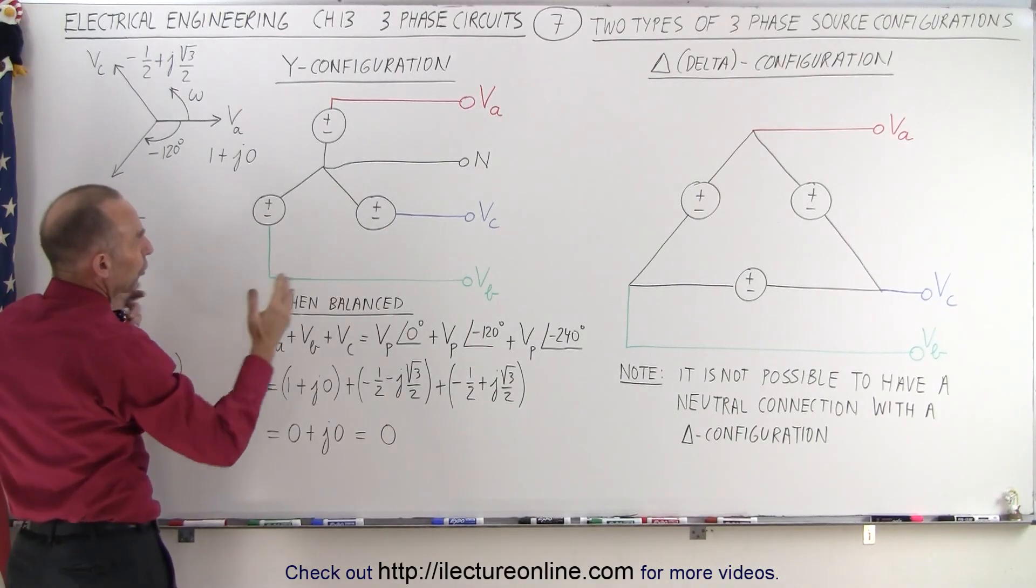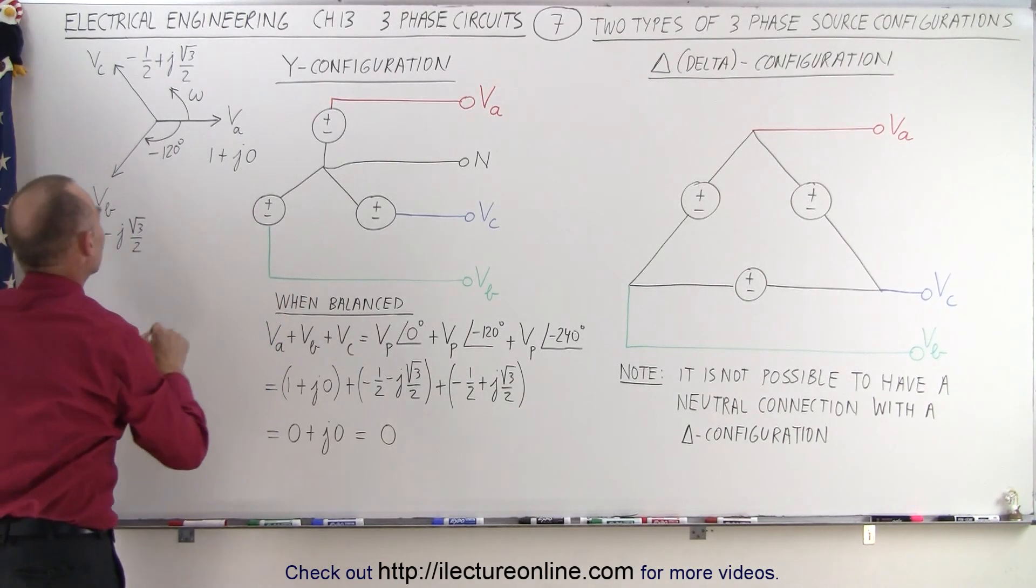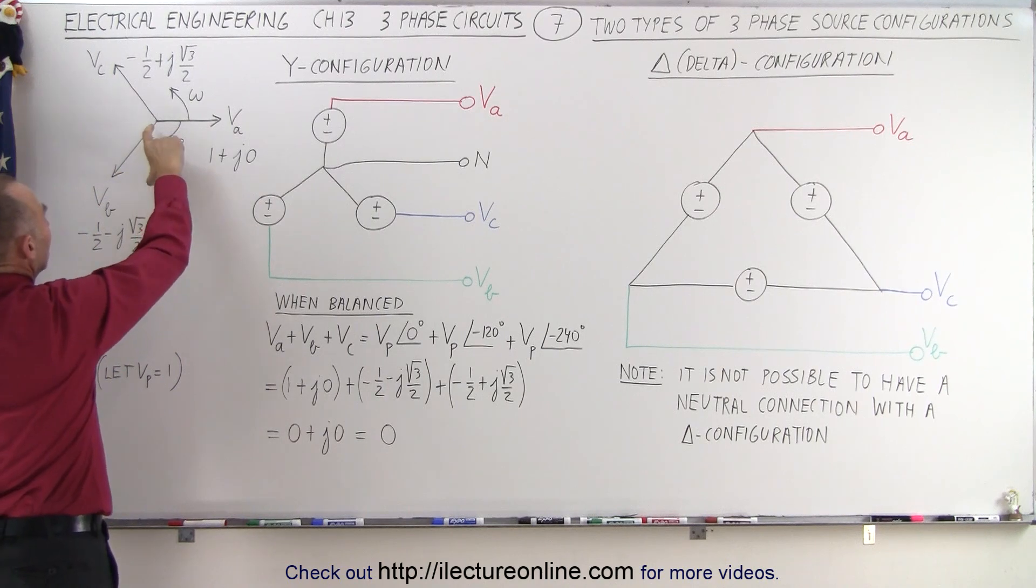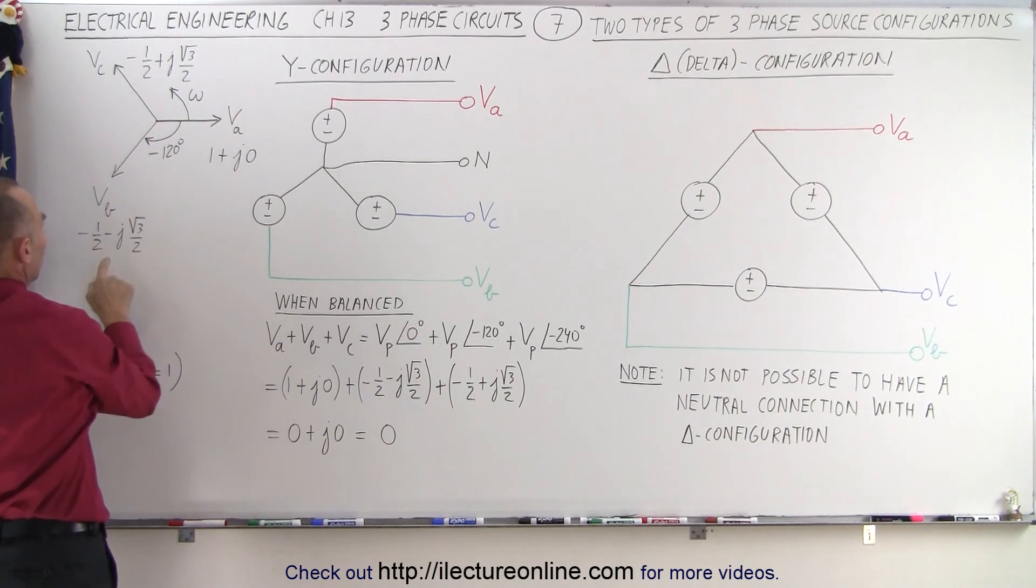Notice the magnitude, of course, has to be the same, but it'll be at a different phase. If we then break this one down into the real part and the imaginary part, the real part will be at minus one-half, and the imaginary part will be at minus square root of 3 over 2.